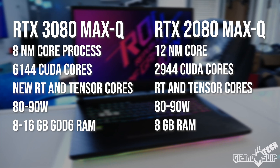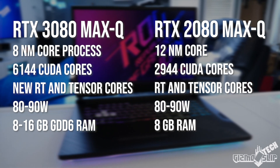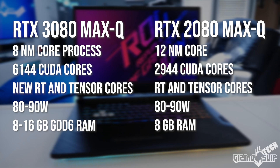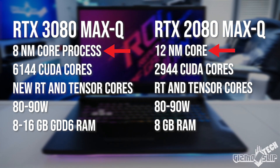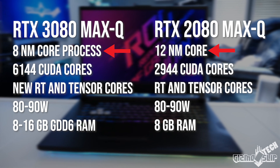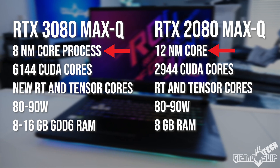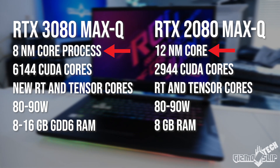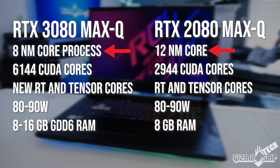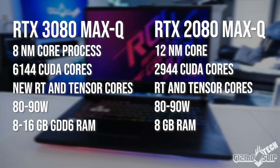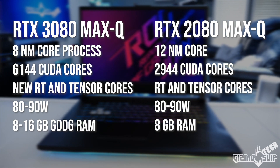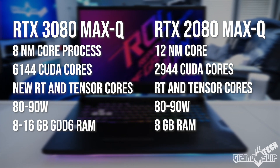I'll have sources to these leaks in the video description down below if you'd like to check them out. So how does the RTX 3080 Max-Q compare to the RTX 2080 Max-Q? First of all, we have an 8-nanometer core process, which means we're going to be more power efficient and able to do more with the same amount of electricity — which is crucial to big improvements in performance. Compared to the RTX 2080 Max-Q which uses a 12-nanometer process, that's a 33% reduction in core nanometer size, so we should see massive power efficiency gains.